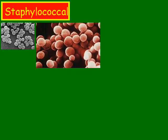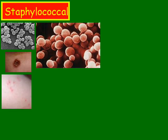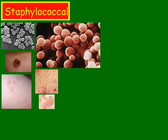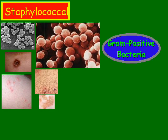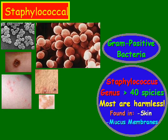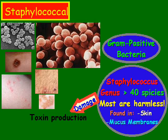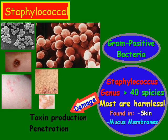Staphylococcus is probably better known as staph. It can cause a wide variety of diseases in humans and other animals. It is round and can be thought of as a gram-positive bacteria. The Staphylococcus genus comprises over 40 different species. Most of them are harmless and found in the skin and mucous membranes. However, a few can cause serious damage, either through toxin production which can cause food poisoning, or through penetration such as bacterial infections.